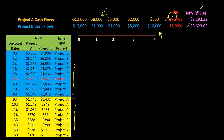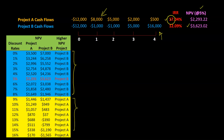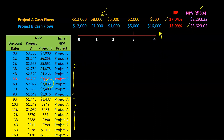However, IRR is unequivocally saying that A is always the better project because it has the higher IRR. And so this is where the inconsistency is occurring between the two methods for these two projects.